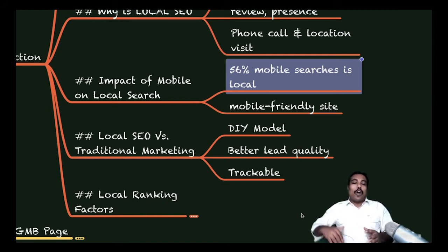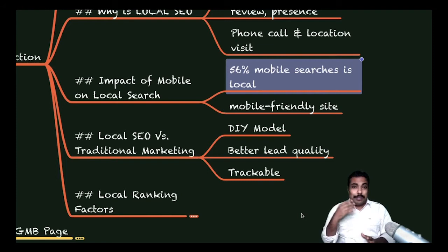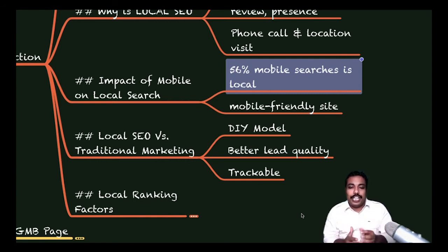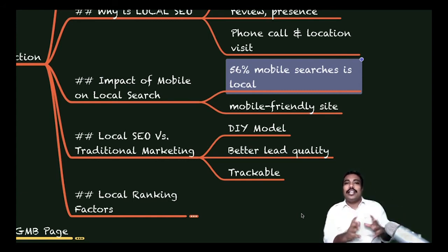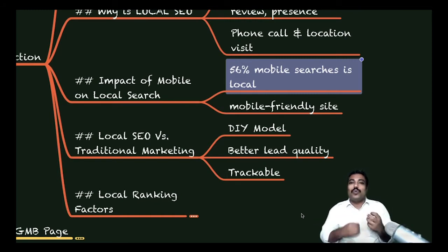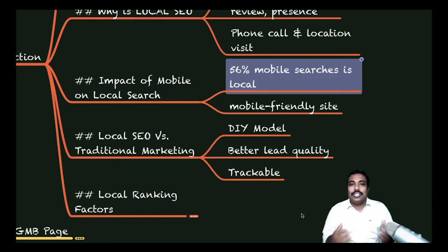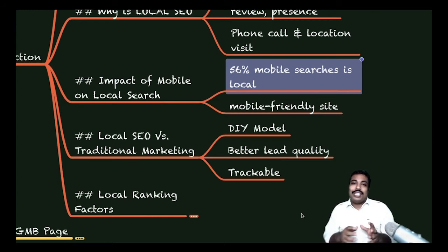Then, trackable results: how many people came, what is the traffic, how many leads, how many calls, how many messages, directions chosen, what keywords and search terms people are searching — every detail you get. So everything is trackable. You know exactly what is happening, and you can make effective decisions based on that data.